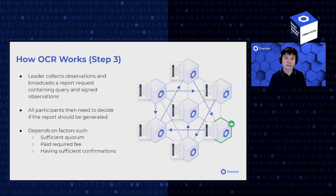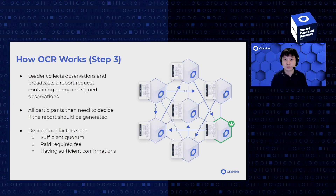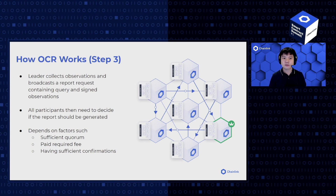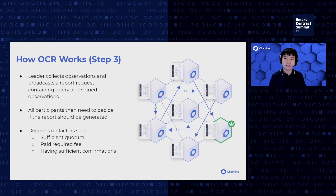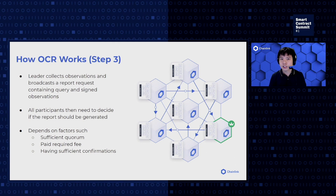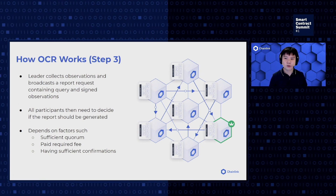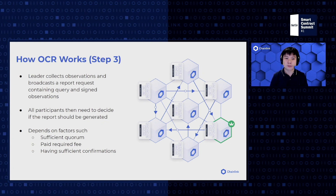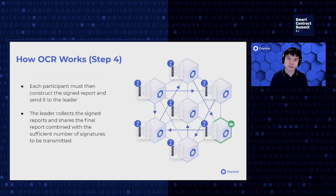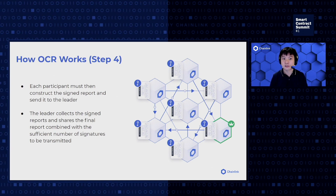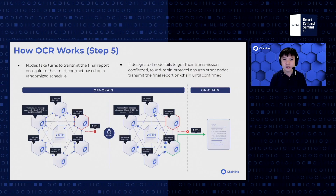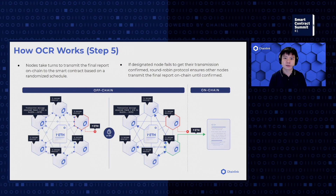The leader collects these observations and broadcasts both the query and the signed observations to all nodes. All participants then need to decide if the report should be generated on-chain, which could depend on several factors. In the case of price data, you only want to broadcast reports that deviate from the on-chain price above a certain threshold. In the case of cross-chain, the network should only send transactions that have reached quorum, have sufficient block confirmations, and paid a sufficient amount of gas for transmission on the destination network. Each participant will then sign the report and send it to the leader, who collects the signed reports and shares the final report for transmission.